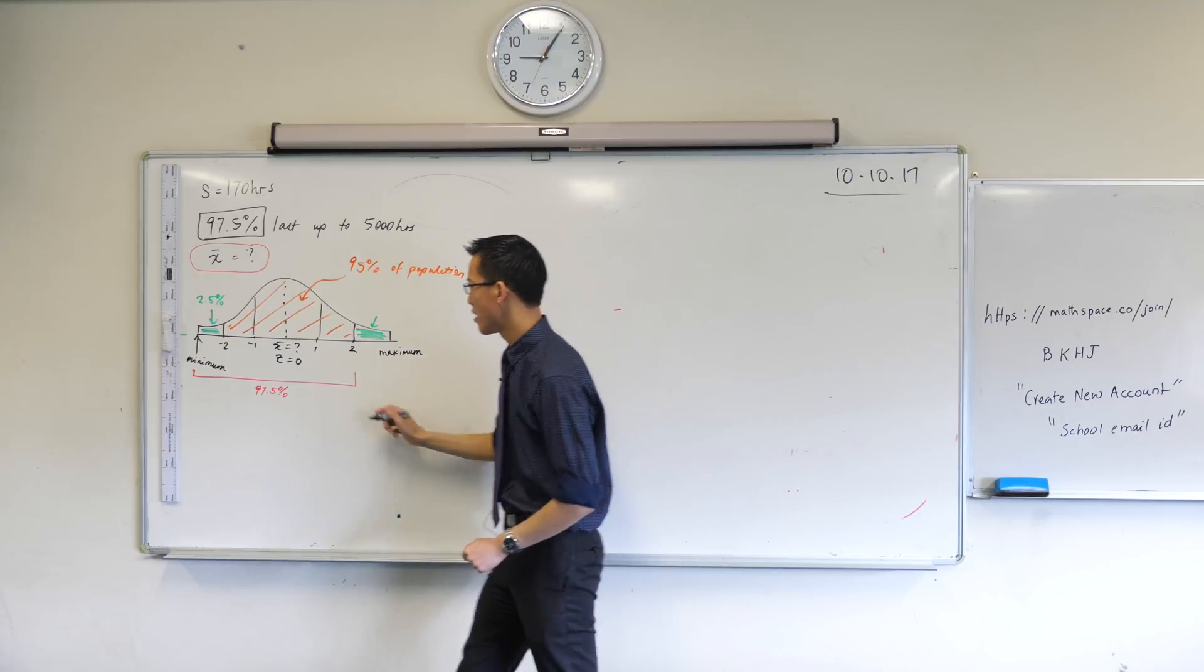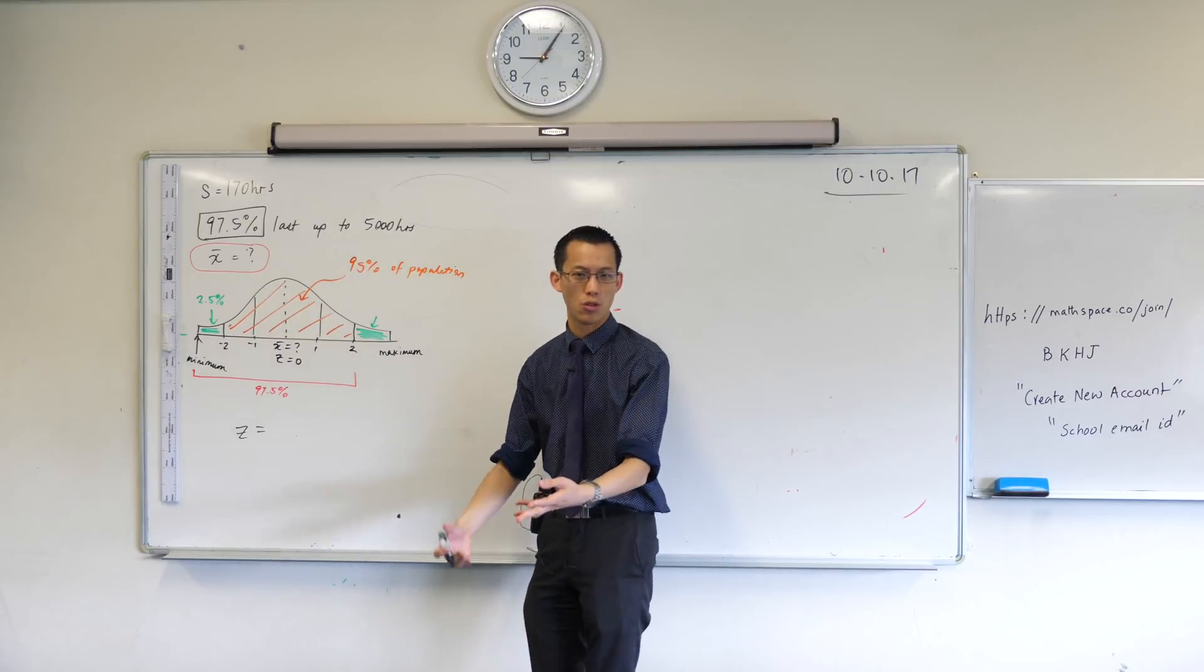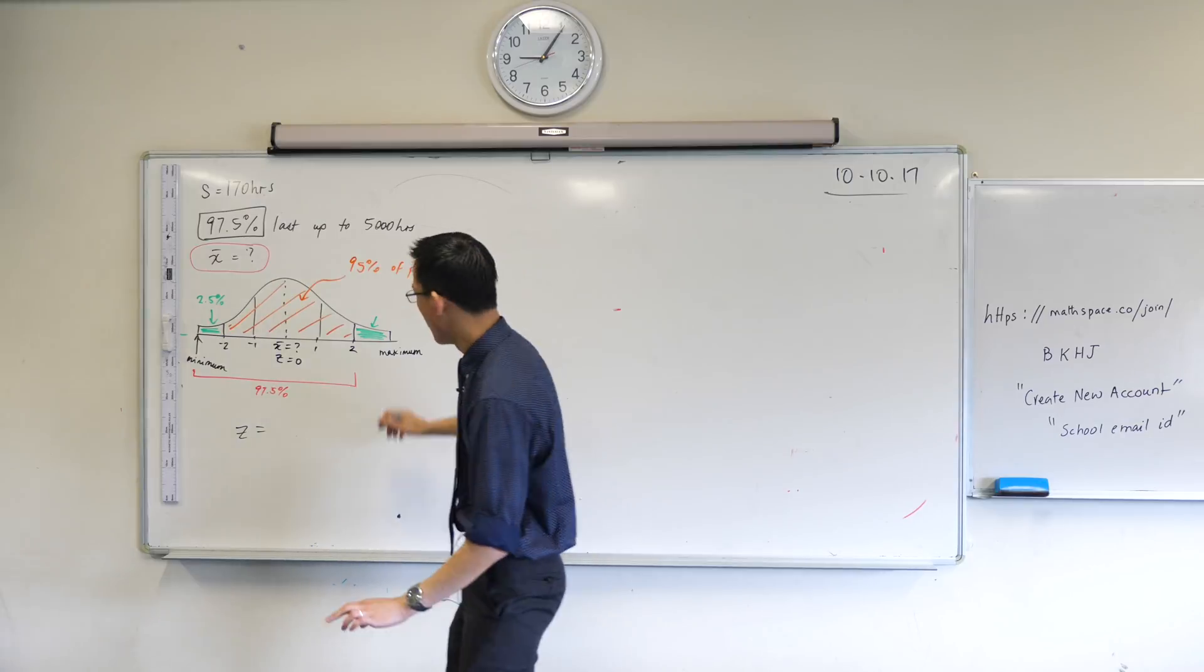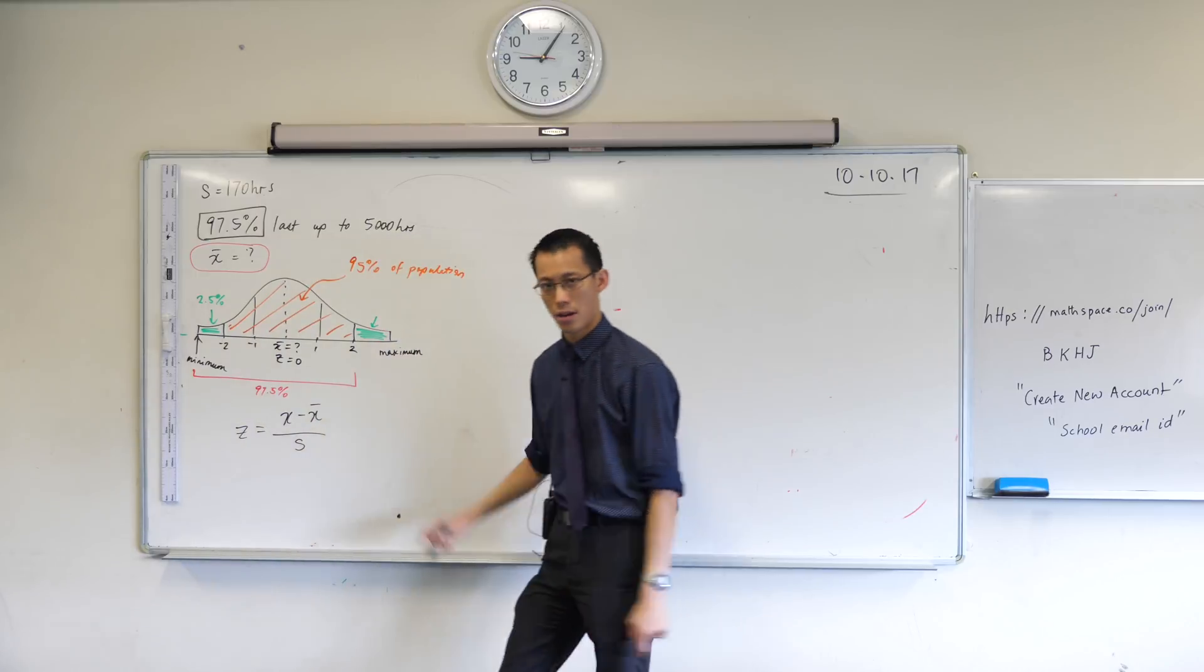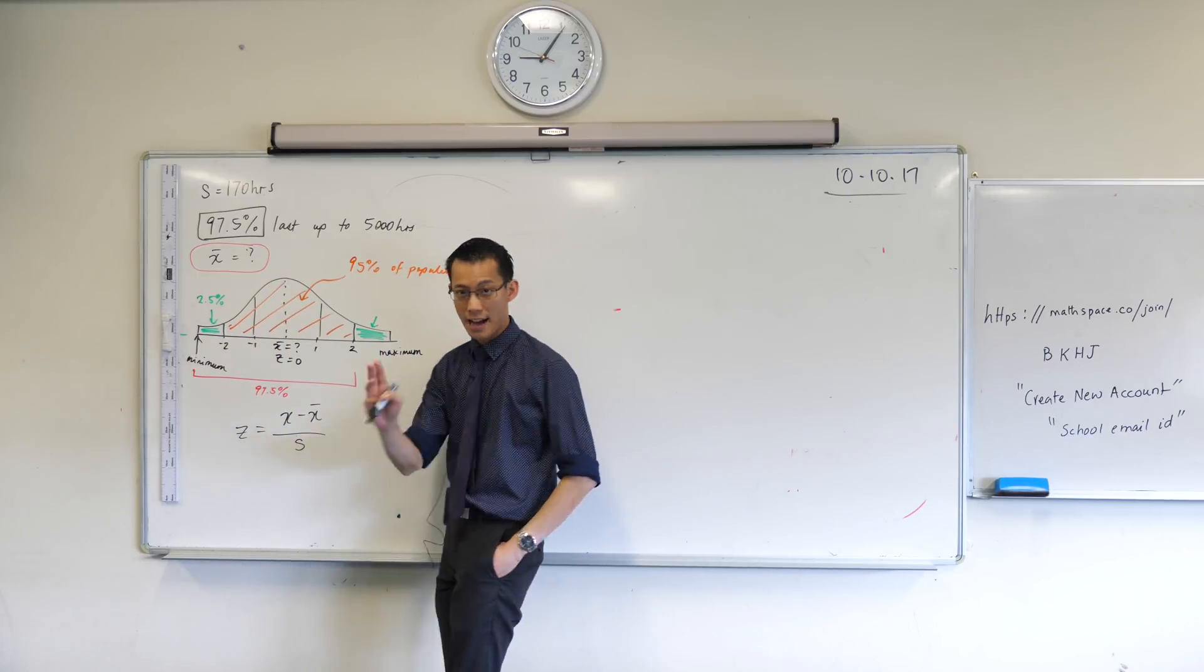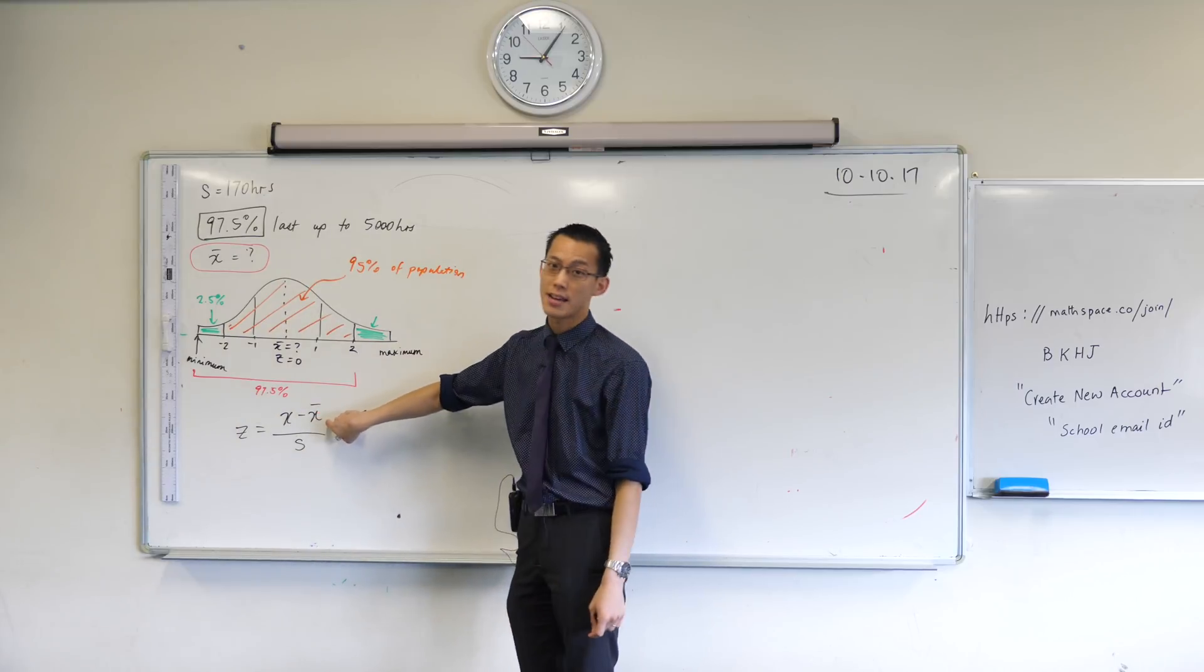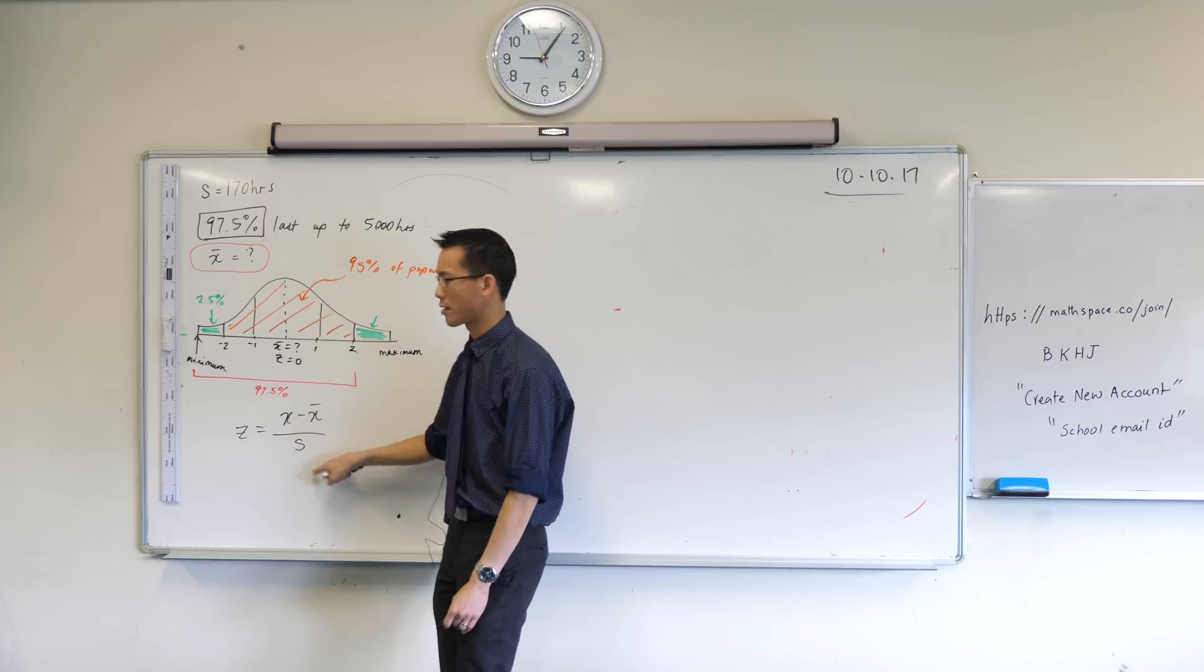So I can write: how do I work out a z-score? Well, the formula and data sheet will help you. You have a formula right there that the z-score is x minus x bar on s. Remember what this means? X is the actual score of your particular light globe. X bar is the mean lifetime, which is the thing we're trying to work out. S is your standard deviation.